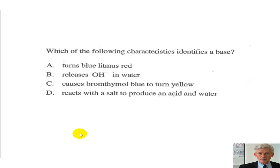So the next question, which of the following characteristics identifies a base? The correct response here should be B, releases hydroxide. This basically is the definition of a base. If you're releasing hydroxide in water, this is what makes it basic. Turns blue litmus red? Blue. Causes bromothymol blue to turn yellow? No. Acids cause bromothymol blue to turn yellow. Reacts with a salt to produce acid and water? In every multiple choice question, there is an option, a distractor, which is nonsense. That one simply doesn't make any sense at all. You should just ignore that and concentrate on the two or three that maybe are possibilities.